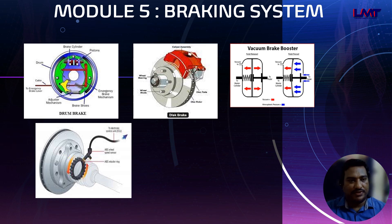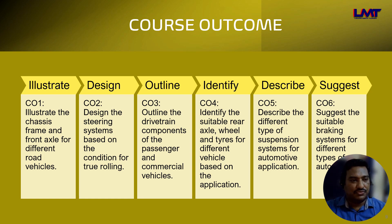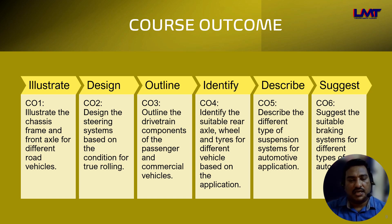That covers all five modules. At the end of this course, the course outcomes are as follows: students will be able to illustrate the chassis frame and front axle for different road vehicles, design the steering system based on the condition for true rolling, outline the drivetrain components of passenger and commercial vehicles, identify suitable rear axle, wheels, and tires for different vehicles based on application, describe different types of suspension systems for automotive applications, and suggest a suitable braking system for different types of automobiles.